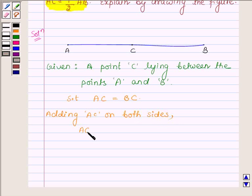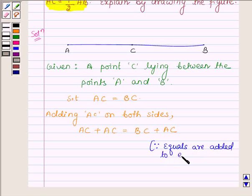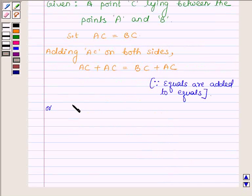We have AC plus AC is equal to BC plus AC, since equals are added to equals. That is 2 times AC is equal to AB, since BC plus AC coincides with AB.